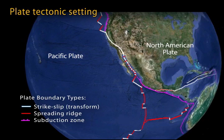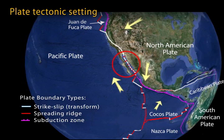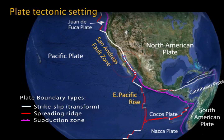Here we'll focus on the Gulf of California Rift Zone, a divergent margin which is propagating into California. It is a transitional corridor that connects the East Pacific Rise Spreading Ridge to the south with the San Andreas Fault Zone in California.